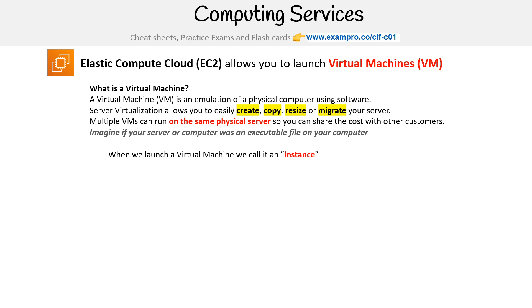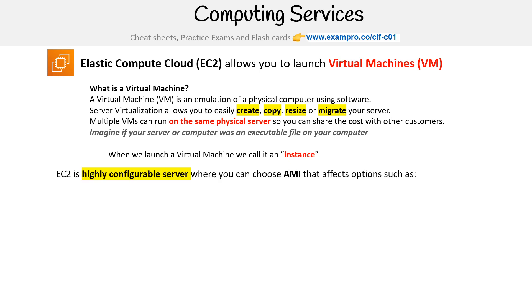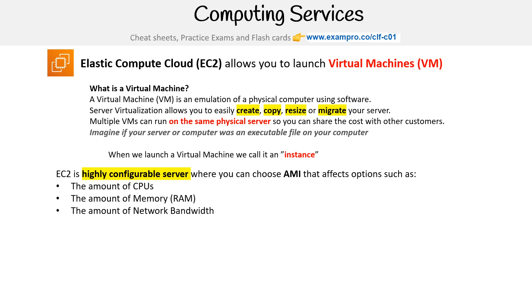When we launch a VM, we call it an instance. EC2 is a highly configurable server where you can choose the AMI — the Amazon Machine Image — that affects options such as the amount of CPUs or vCPUs (virtual CPUs), amount of memory (RAM), and the amount of network bandwidth.